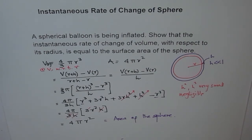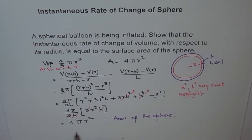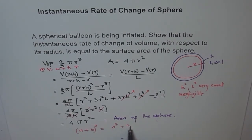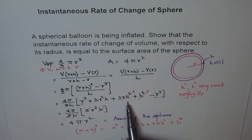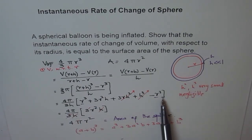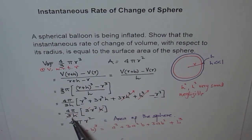Go through it once again and try to understand how we did it. A critical step is to remember the formula: (a+b)³ = a³ + 3a²b + 3ab² + b³. We used this formula to expand the expression, then neglected the h³ and h² terms. In all instantaneous rate of change problems, if h is very small, h² and h³ are neglected. The remaining h cancels as a common factor, giving the simplified expression. Hence we have proved that the instantaneous rate of change of volume for a sphere with respect to radius is always equal to the surface area of the sphere.